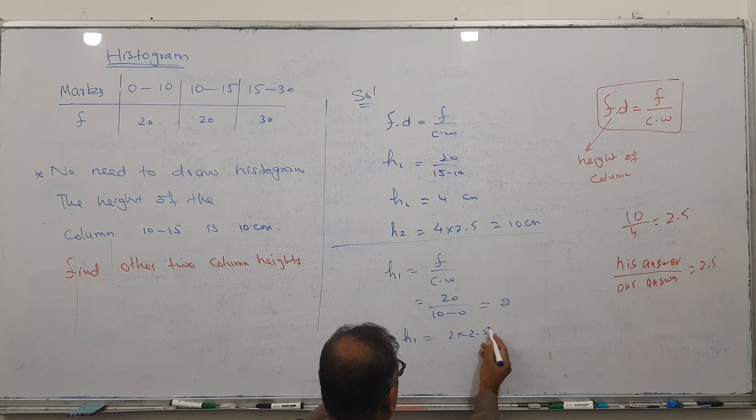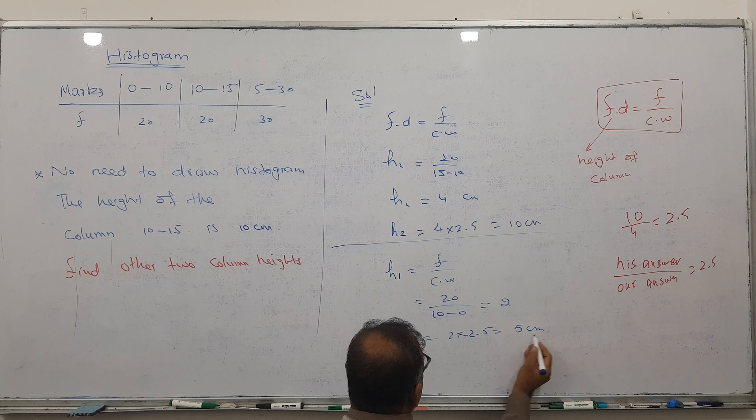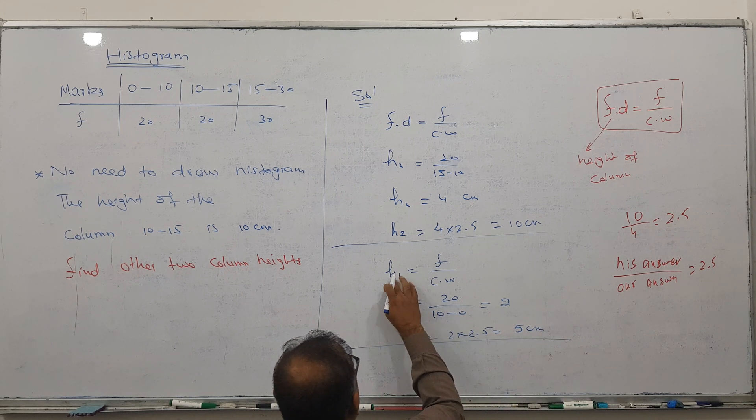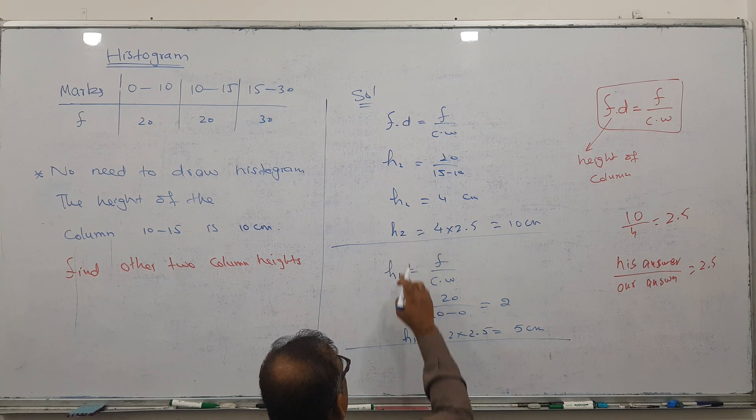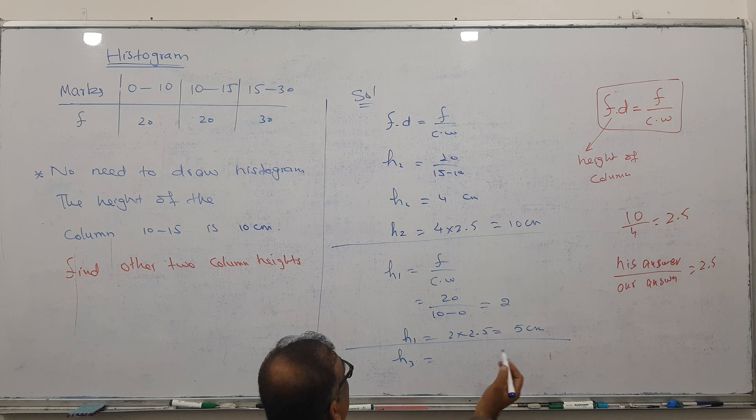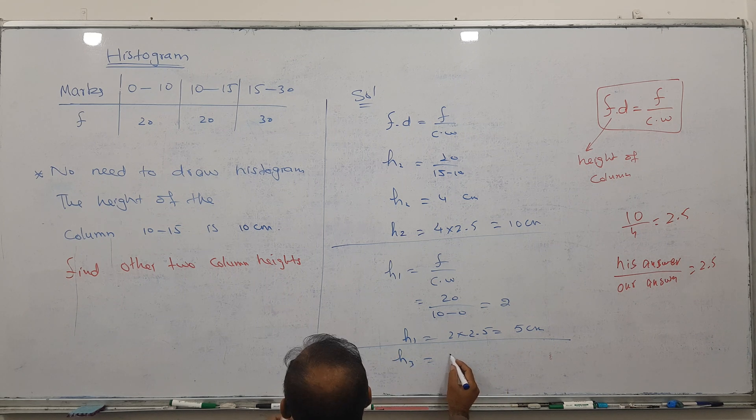Is 2 the answer? No. Height 1 equals 2 times 2.5, so 2 times 2.5 gives us 5 centimeters. So I got height 1. Height 2 was given by him.